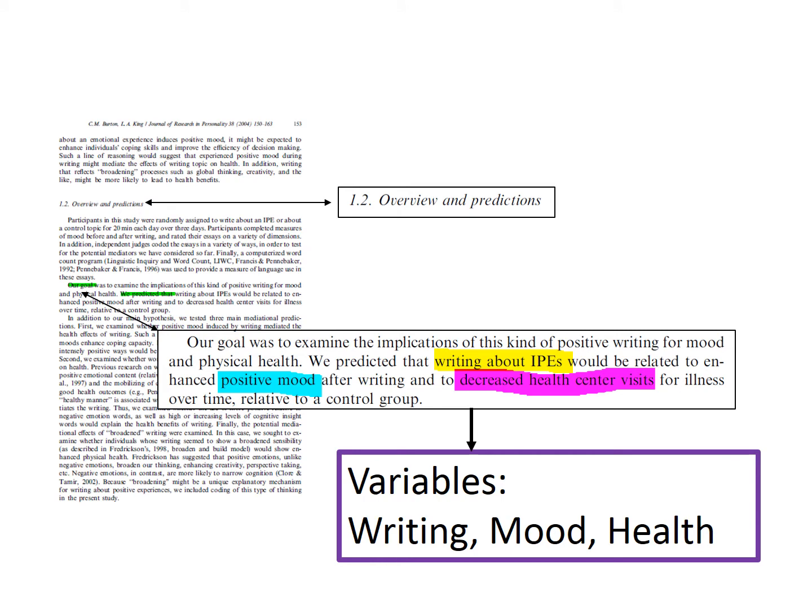Going back to the focus helps us identify the variables. It's easier when they identify a prediction or a hypothesis because that tends to directly state the variables. Then we just have to figure out which parts are what they think will vary and which parts describe how they will vary.